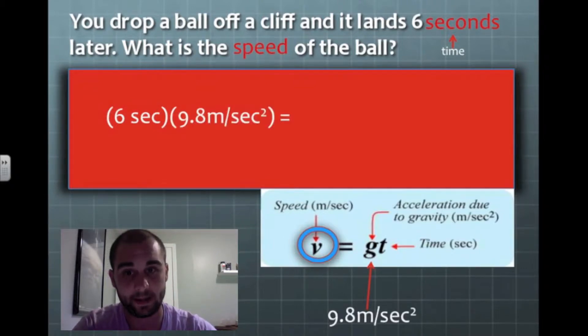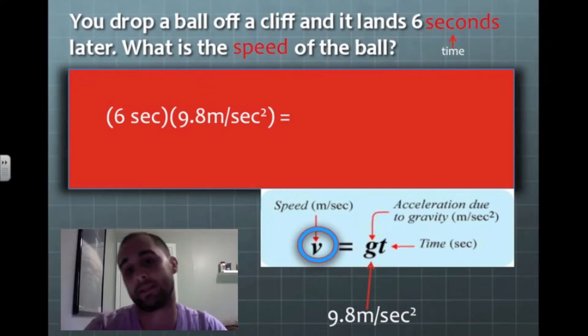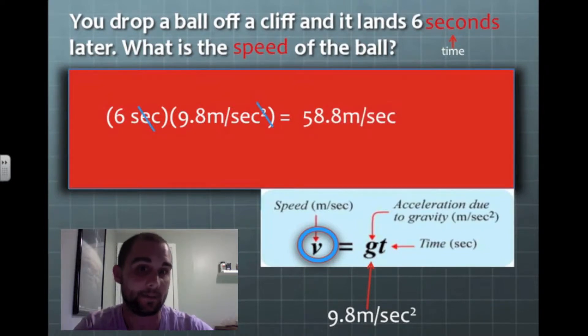G is always going to be 9.8 meters per second squared. So I'm going to multiply that by six. Now, I can cross out my seconds and my squared. And when I multiply them together, I'm going to end up with 58.8 meters per second.